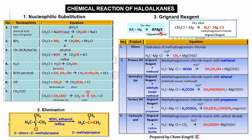From the Grignard reagent, we can form alkane, primary alcohol, secondary alcohol, tertiary alcohol, and carboxylic acid. You will encounter this again when studying the preparation of alcohols and the chemical reactions of carbonyl compounds, which involve methanal, ethanal, other aldehydes, and ketones.